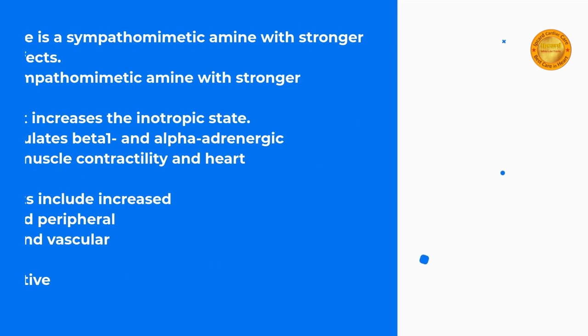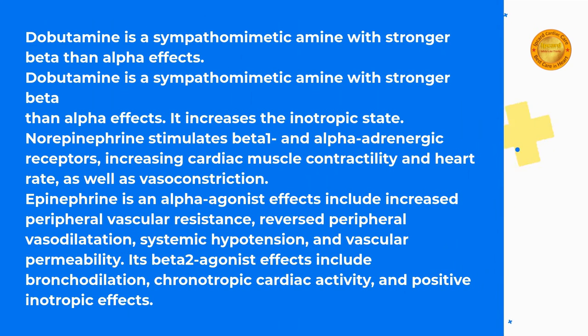Dobutamine is a sympathomimetic amine with stronger beta- than alpha-adrenergic effects; it increases the inotropic state. Norepinephrine stimulates beta-1 and alpha-adrenergic receptors, increasing cardiac muscle contractility and heart rate, as well as vasoconstriction.